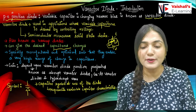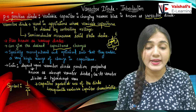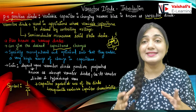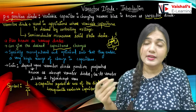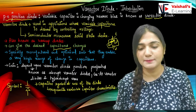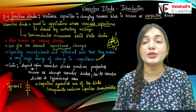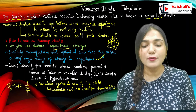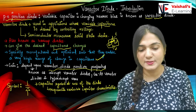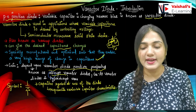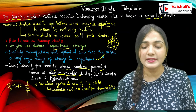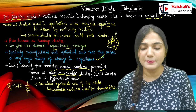It is specially manufactured and optimized such that it enables a very high range of change in capacitance. The gain depends on the varactor diode's junction properties. Based on junction properties, we classify it as an abrupt varactor diode, a gallium arsenide varactor diode, or a hyper-abrupt varactor diode.